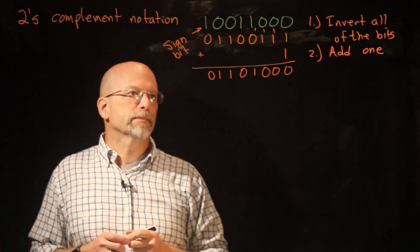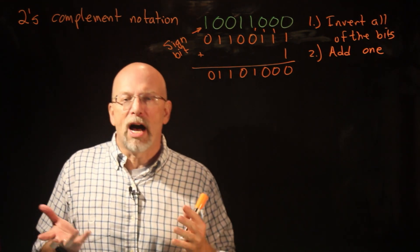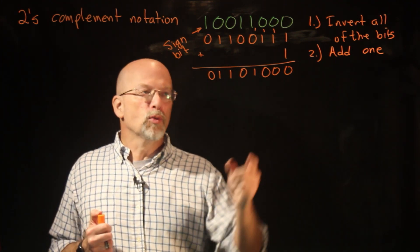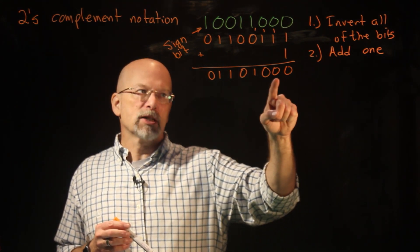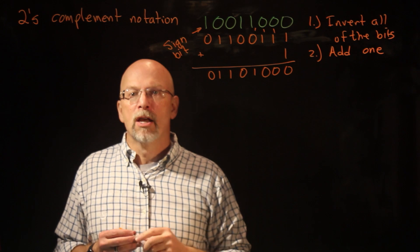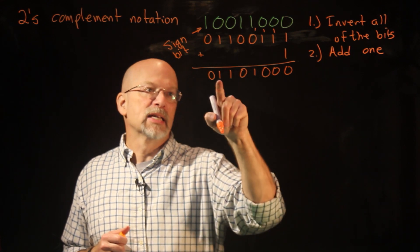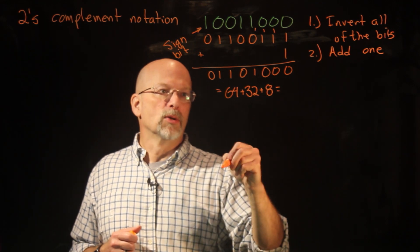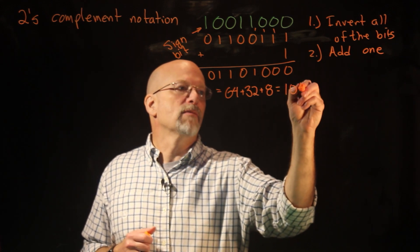Is that a positive or negative number? Well, that most significant bit is zero, so it's a positive number. Since it's a positive number, it has exactly the same powers-of-two representation as unsigned binary. Unsigned binary says this is the ones, twos, fours, eights, 16, 32, 64, 128 places. So this number is equal to 64 plus 32 plus 8 — that's 96 plus 8 — which is 104 base 10.